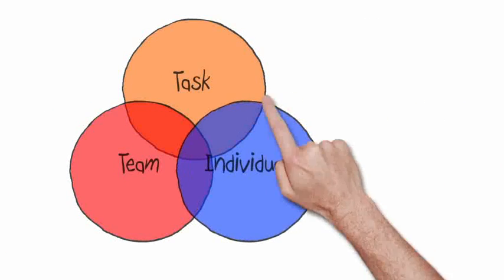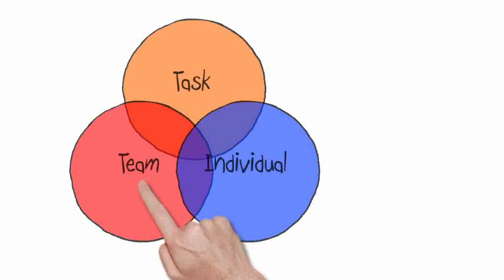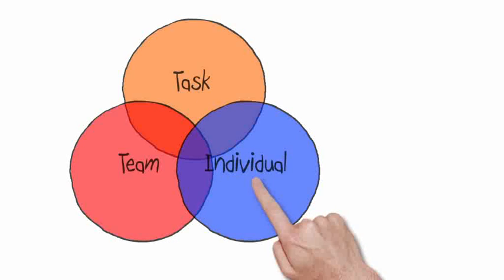The model shows the three elements of all leadership situations: achieving the task, developing the team, and developing individuals. These overlap to demonstrate that they're dependent on each other, as well as being separately essential.